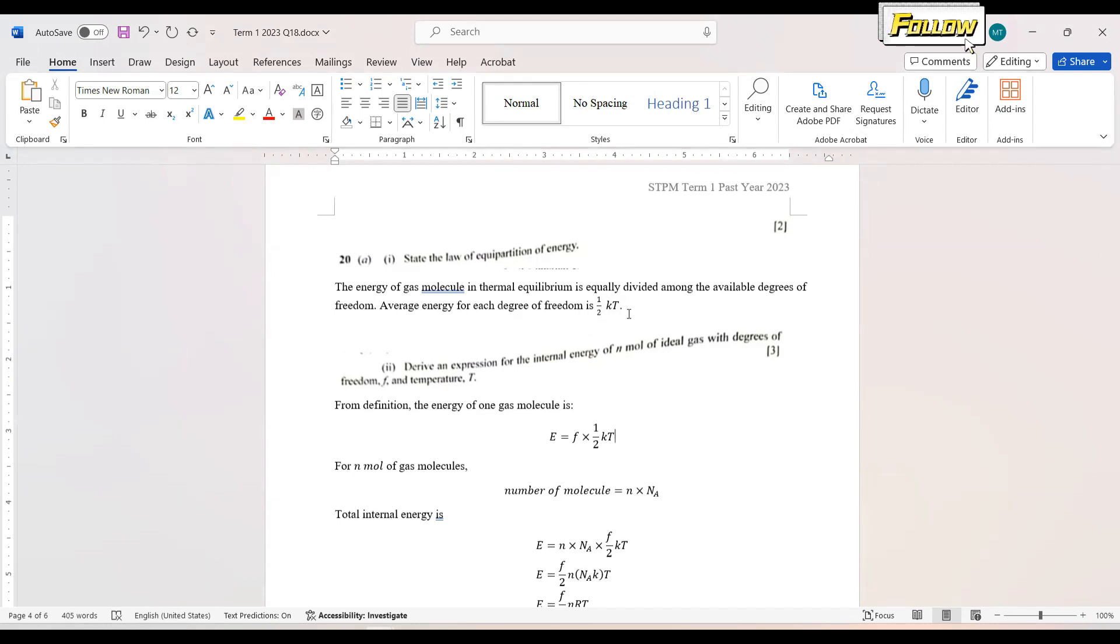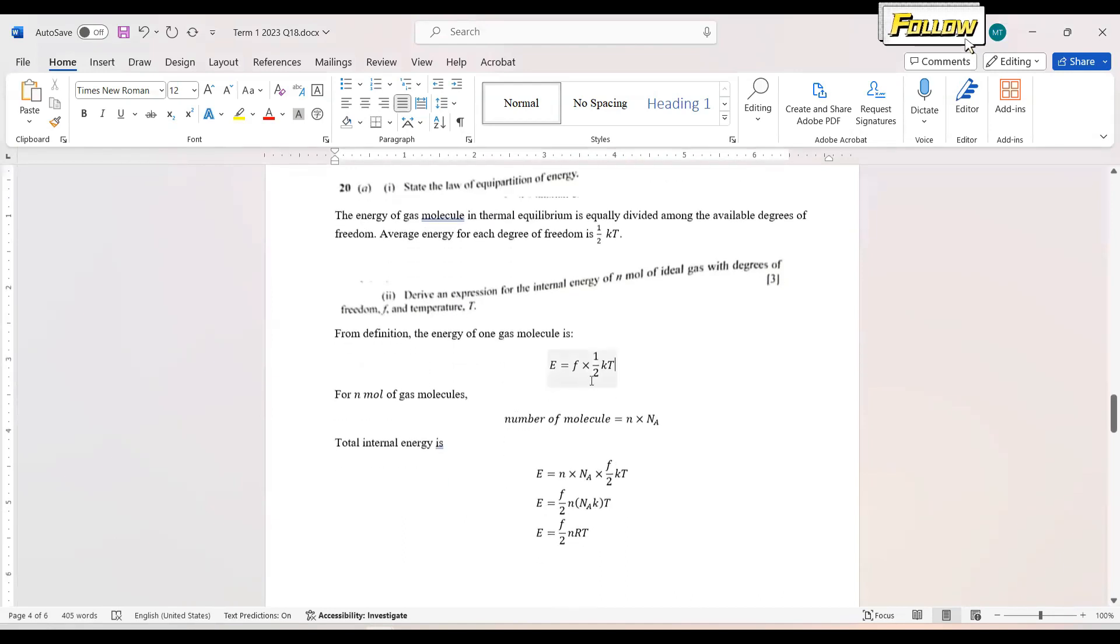This definition is important to answer question 2. Question 2 is to derive an expression for the internal energy of N mol of ideal gas with degrees of freedom F and temperature T. The definition gives us the energy of one gas molecule, which is F over 2 kT.